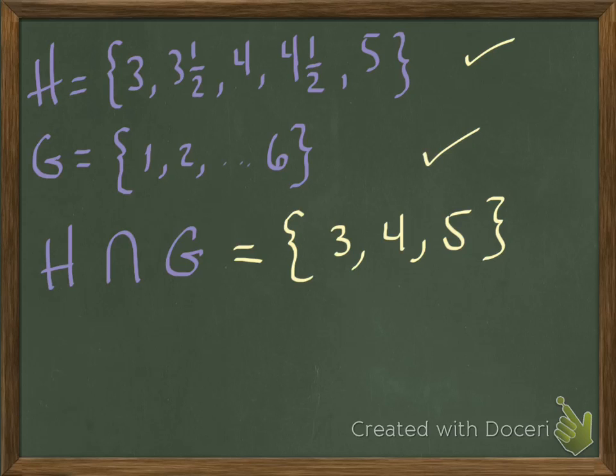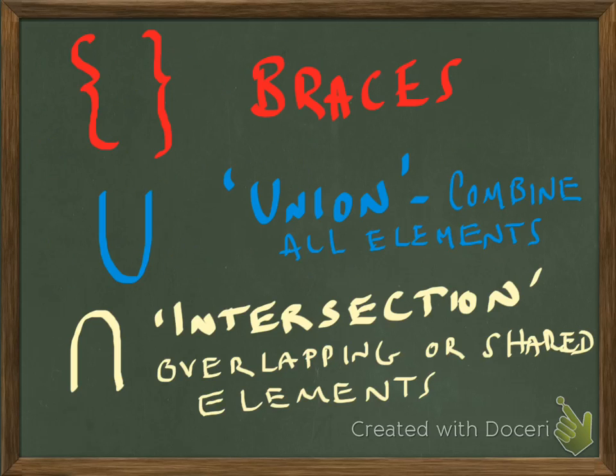So just to summarize here, as we're getting towards the end, the set notation uses braces. We have the union of two sets, which just means combine all elements in both sets. And remember, if there's any repeated elements, you only have to say them once. And we also have this thing called intersection of two sets. That's where you only express the overlapping or shared elements between two sets. Okay, thanks for listening.